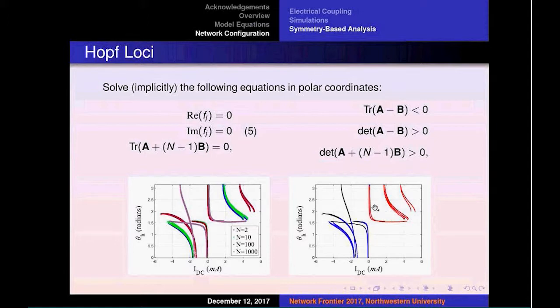In red are the curves where the synchronization manifold will be locally asymptotically stable as a function of the input current. This is the angle of the applied magnetization field.